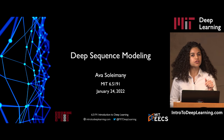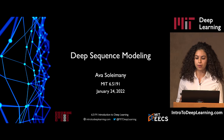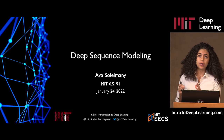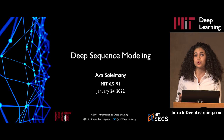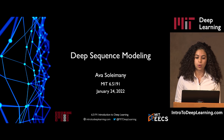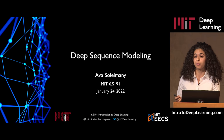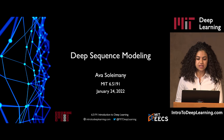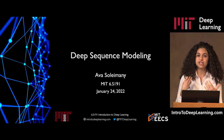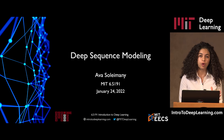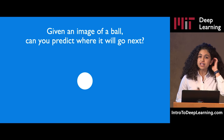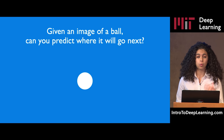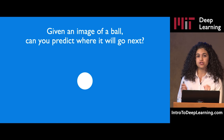In Alexander's first lecture, we learned about the essentials of neural networks and feed-forward models and how to construct them. Now we're going to turn our attention to applying neural networks to tasks that involve modeling sequences of data. We'll see why these sorts of tasks require a fundamentally different type of network architecture. To build up to that point, we're going to walk through step by step, building up intuition about why modeling sequences is different and important, starting back with our fundamentals of feed-forward networks.